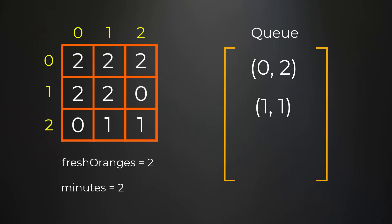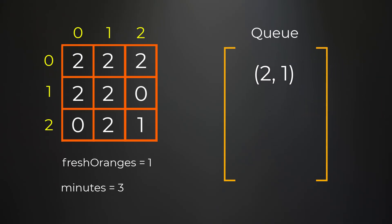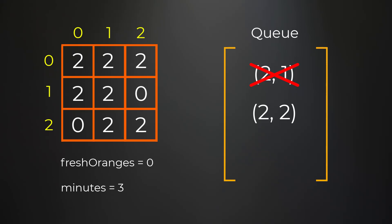Now minutes equals two. In the third iteration we have two elements in our queue so we pull twice. We pop position (0,2) — no neighbors with fresh oranges. We pop position (1,1) and the down neighbor is a fresh orange, so we add that position to the queue, change it to rotten, and decrease our fresh count by one. We increase minutes to three. In the fourth iteration we pop position (2,1) — the right neighbor is fresh, so we add (2,2) to the queue and change it to rotten.